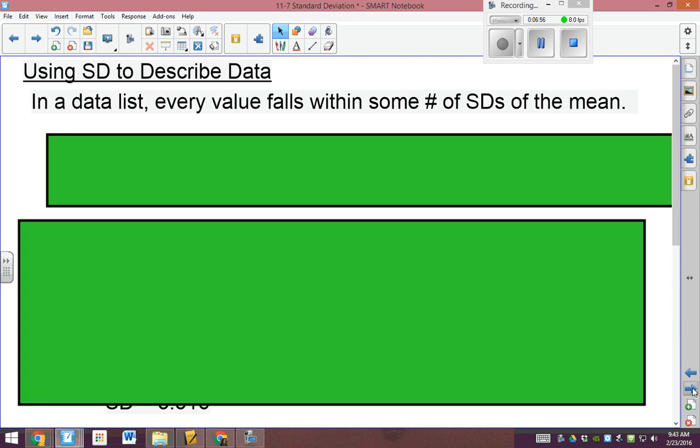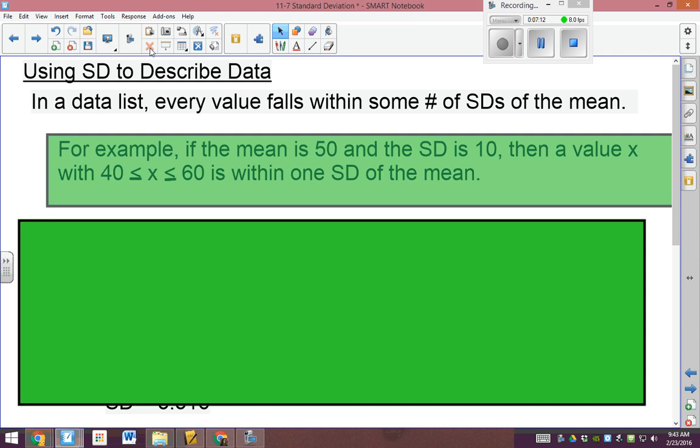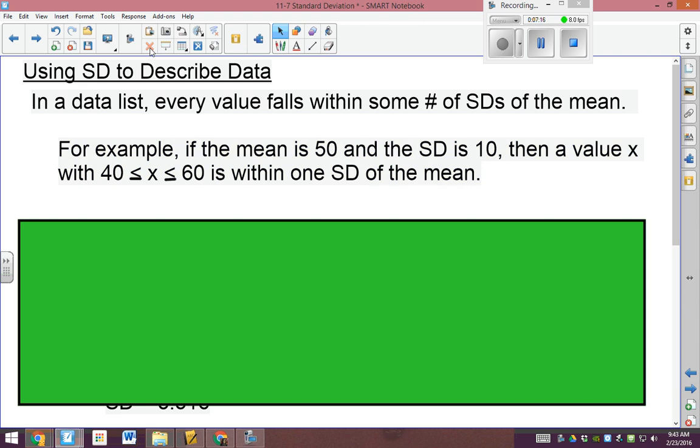And we're back. All right, last concept we need to do. We're just going to describe some data in a list. So how we're going to use standard deviation to measure the spread of data. In a data list, every value falls within some number of standard deviations of the mean. The more standard deviations you have in your data, the more spread out your data is. So an example, if the mean of some data is 50 and the standard deviation is 10, then a value within 40 and 60 is within one standard deviation. Standard deviation is just kind of an idea to figure out a tolerance of something. If you're measuring some piece of metal that you have to put in a building and then you want the tolerance to be one standard deviation of its length, that means it can't be above, in this case, 60 or below 40. If it is, you've got to throw it out and start over.